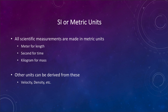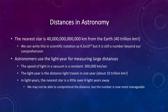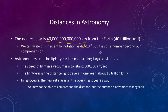Now looking at some of the distances we use in astronomy: the nearest star is about 40 trillion kilometers away from the Earth — a very large number. We can write this in scientific notation as 4.0 times 10 to the 13th power. We still can't really comprehend things like trillions — our mind just cannot wrap around a number that large. So to simplify that, astronomers use another term called the light year for measuring these very large distances. The speed of light in a vacuum is a constant: 300,000 kilometers per second.